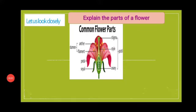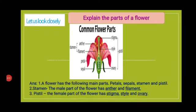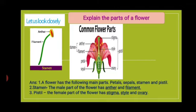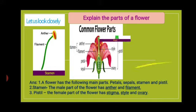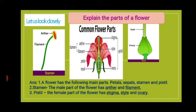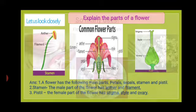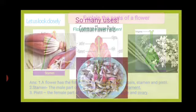Let us look closely. Parts of a flower: A flower has the following main parts — colorful part: petals; green part: sepals; stamen and pistil. Stamen, the male part of the flower, has anther and filament. Pistil, the female part of the flower, has stigma, style and ovary.